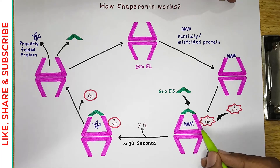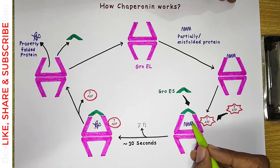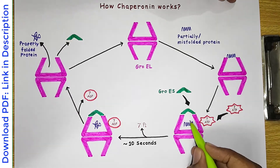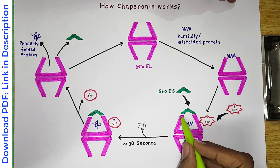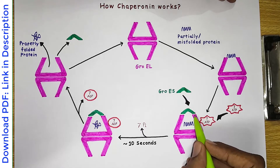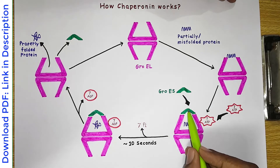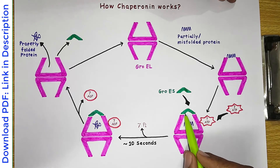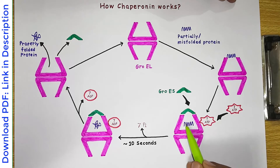Once the ATPs are bound with the chamber, conformational changes occur in the apical region, and the protein that was initially bound with the apical region falls inside the cavity — inside the chamber. The newly vacated apical region is then occupied by GroES, the second major component of the chaperonin. Once GroES binds there, the chamber is closed and the protein is trapped inside.